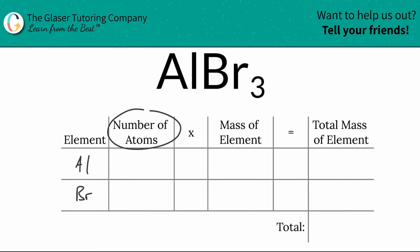The next thing is I need to know the number of atoms of each particular element in this entire compound, and that's where the subscripts come into play. So at the bottom of aluminum here, there is an invisible one, so it's telling me that I have one aluminum, so I'm going to write in the number one there. And the subscript for bromine is going to be three, so I'm going to put in a three there.